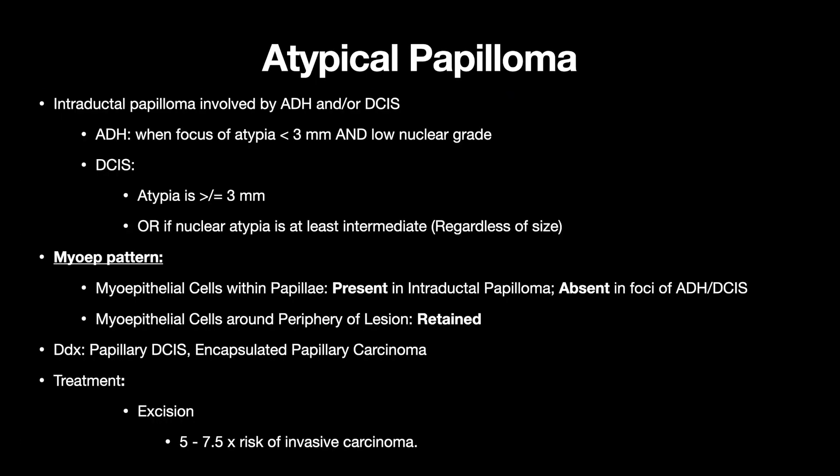Atypical papilloma is an intraductal papilloma involved by ADH and/or DCIS. It's ADH when the focus of atypia is less than 3 mm and low nuclear grade. It's DCIS when the atypia is greater than or equal to 3 mm, or if nuclear atypia is at least intermediate or high grade, regardless of the size. The myoepithelial pattern will be: myoepithelial cells within the papillae will be present in the intraductal papilloma, but absent in the foci of ADH/DCIS. And the myoepithelial cells around the periphery of the lesion will be retained.